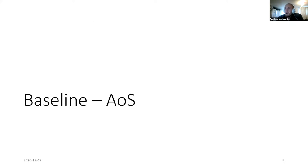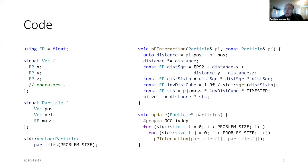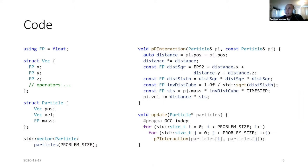I'll show you the baseline version — a naive version with some optimizations on top, something I would have written several years ago before I knew better. Here are the relevant parts of the code. At the very top left I declare a type alias called 'fp' for float, so whenever you see 'fp' it means float. I'm doing this so I could potentially switch the benchmark to double precision by changing it in one place.